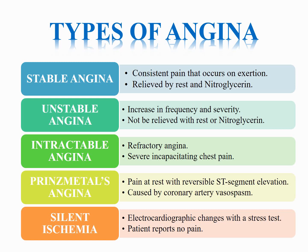The second one is unstable angina, also known as pre-infarctional or crescendo angina. In this type, symptoms are increased in frequency and severity and may not be relieved by rest or nitroglycerin. Next is intractable angina, also known as refractory angina, in which chest pain is chronic, resulting from insufficient blood flow to the heart muscles, and in which treatment by medical and surgical management is insufficient.